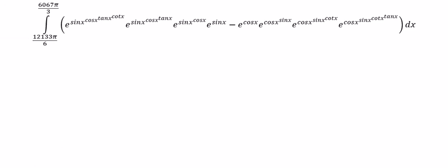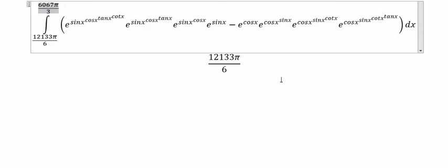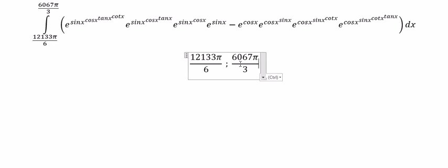First, we need to analyze the bounds in here. If we look carefully at 12,133 over 6, we can write it as π over 6 plus 1011 multiplied by 2π.